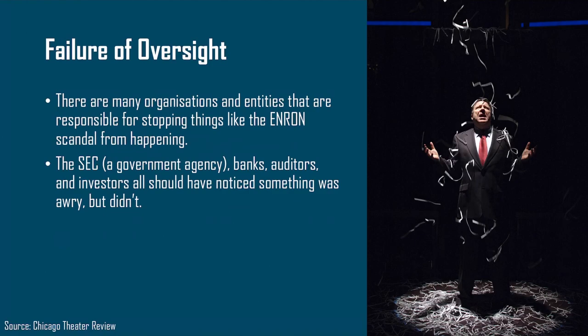Failure of oversight is another key theme. There are many organisations and entities responsible for stopping things like the Enron scandal from happening — for example, the SEC (a government agency in America), the banks, the auditors, and investors should all have noticed something was awry, but they didn't. In fact, some of them willingly turned a blind eye to the misdealings.